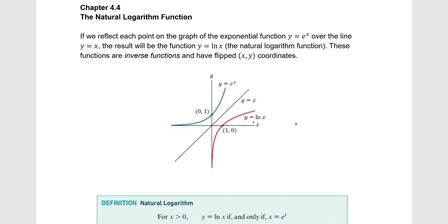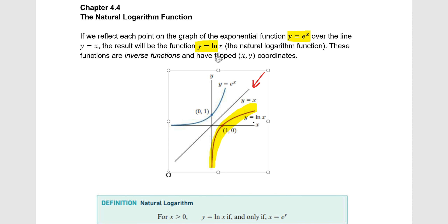In this chapter we're going to be going over the natural logarithm function. We already did the exponential function y equals e to the x. If we take that function and reflect it over the line y equals x, we end up getting the natural logarithm function, written as y equals ln of x. The functions ln(x) and e^x are inverse functions, which means they have flipped x-y coordinates.